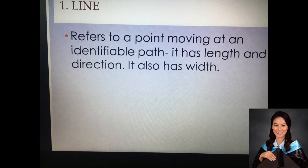A line refers to a point moving at an identifiable path. It has length and direction. It also has width. Although a line is simple, it has variations in view of its orientation, direction, shape, and thickness. These variations impart not only the visual elements into the artwork, but suggest meaning and message being conveyed by the artist.